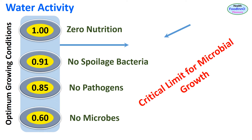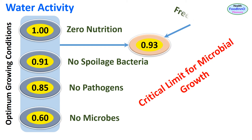Freezing of water to ice can also reduce microbial growth in frozen samples. Microbial growth is usually stopped below minus 7 degrees C, which corresponds to a water activity of 0.93. Although enzymatic and non-enzymatic reactions continue even at much lower temperatures, they proceed at a slower rate.